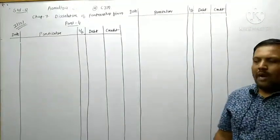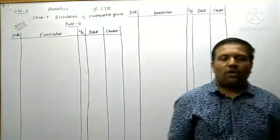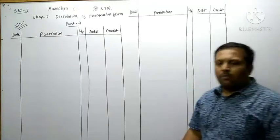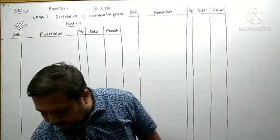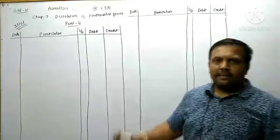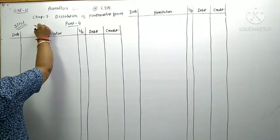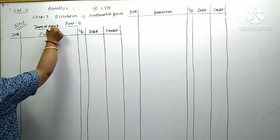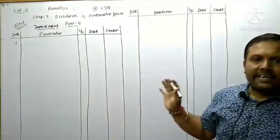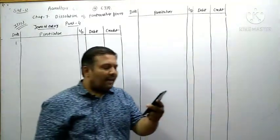Hello friends, good afternoon, welcome to Aaradhya Classes. Standard 12, Chapter 7 - Dissolution of a Partnership Firm. Textbook Illustration 1, page number 286 - journal entries for the following transactions. To keep your attention, we have different transactions to practice one by one.